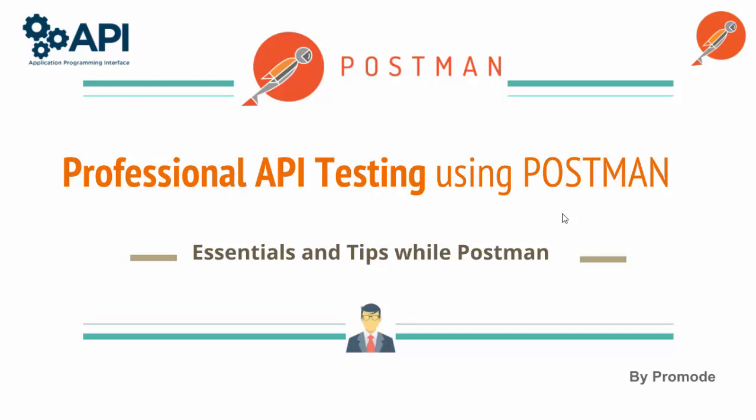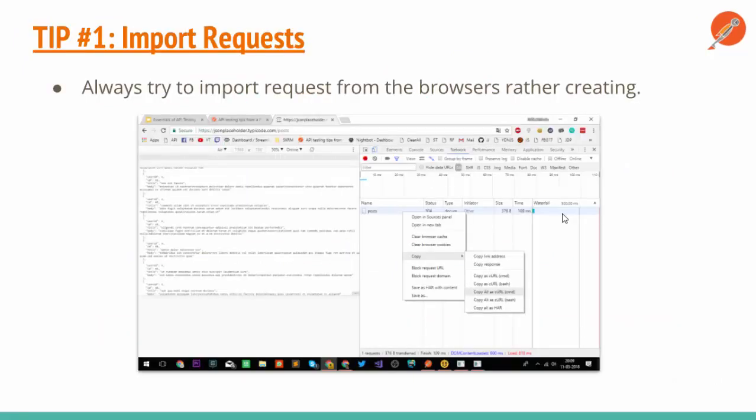The first tip is related to importing requests. While doing API testing, we always try to create different kinds of requests — for example a GET request, POST request, PATCH, or DELETE request — by creating them manually in Postman. That's time-consuming. If you already have a certain kind of API or a UI for it, you can make a POST, DELETE, or PATCH request using that. What you can do is directly import them using the 'import as cURL' option in Postman.